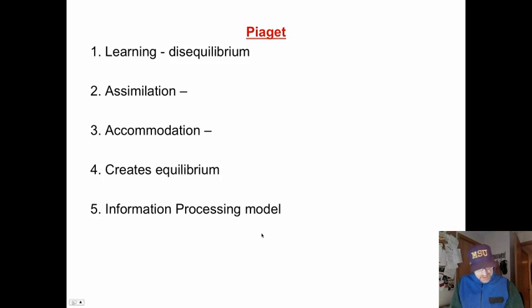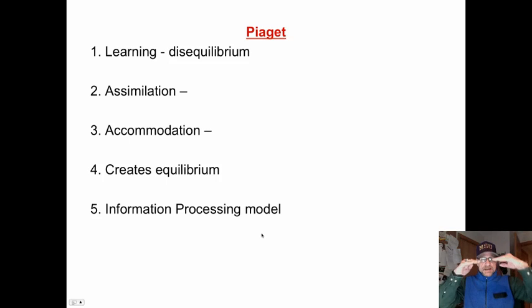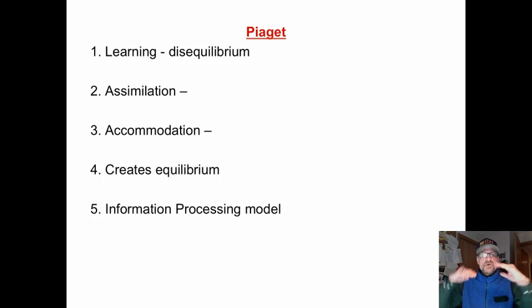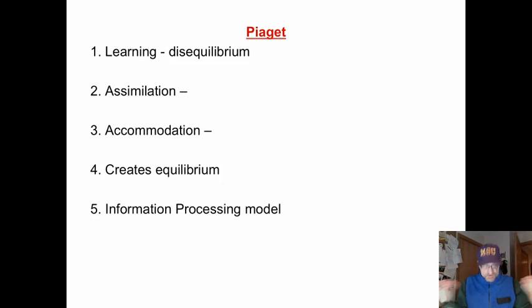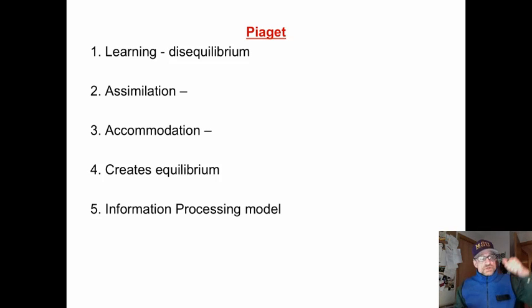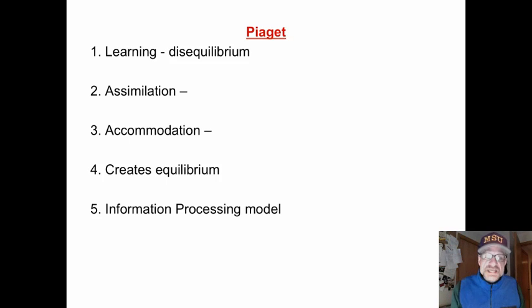Piaget says learning involves disequilibrium — an imbalance. Equilibrium is balance; disequilibrium means, 'I want to find out, I'm curious, the world doesn't seem right.' We have this disequilibrium, this cognitive dissonance — a difference between what you know and what you are experiencing.